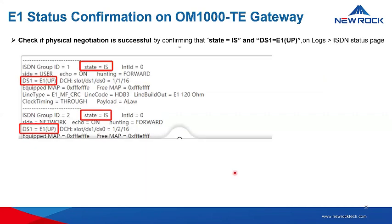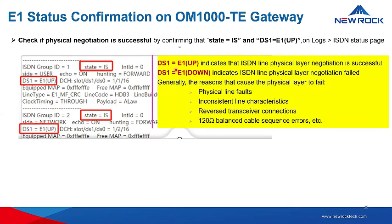To check status confirmation on the OM1000, verify that the physical negotiation is successful by confirming the state is IS and DS1 is up on the log ISDN status page. If DS1 is up, the ISDN physical layer negotiation is successful; if it shows down, negotiation has failed. Possible reasons include physical line faults, inconsistent line characteristics, reverse transceiver connections, or a 120 ohm balance cable sequence error — in which case, replug and check again.